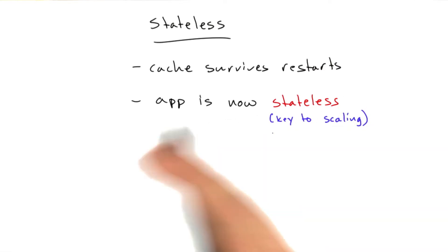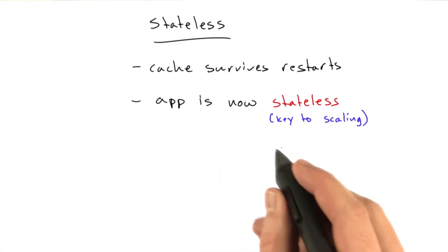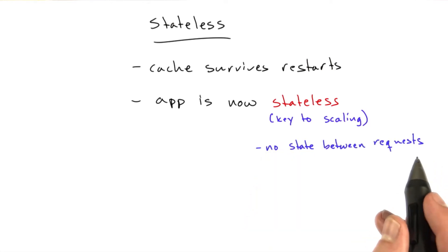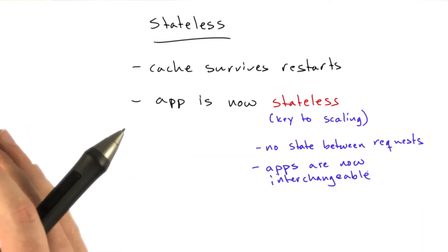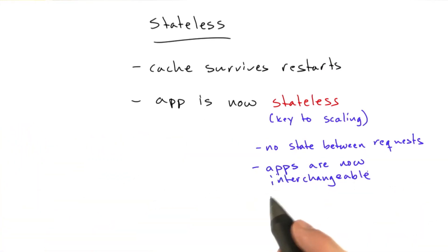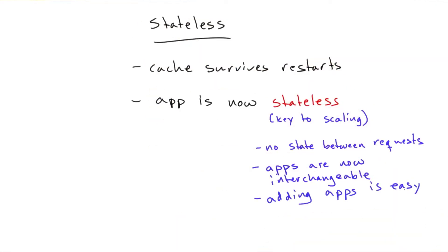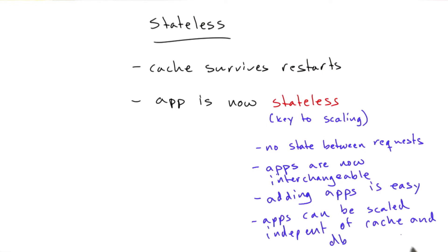What stateless means is our app, between any two requests, stores no state. There's no state between requests, which means our apps are interchangeable, which means we can have multiple apps without any drama. We have our load balancer, we have our memcached, and in between those two pieces of technology are as many app servers as we need. Adding more app servers is easy, and removing an app server is also easy and not painful. It means our apps can be scaled independently of our cache and our database.